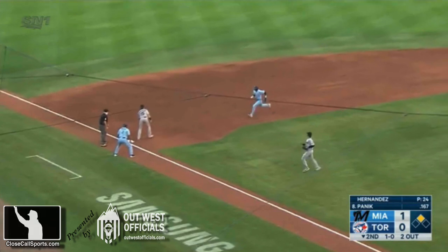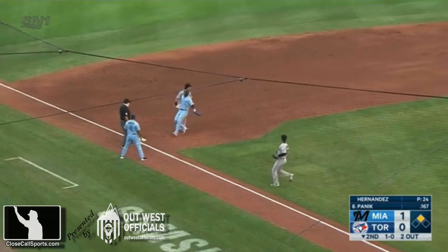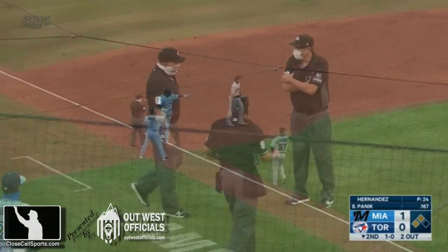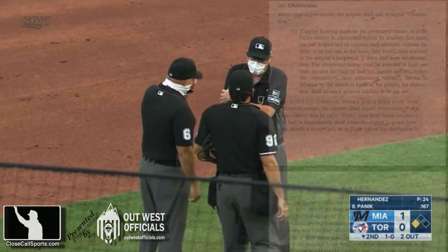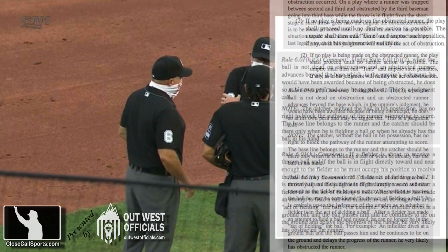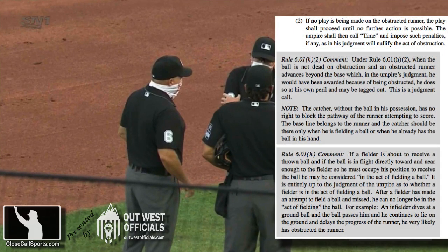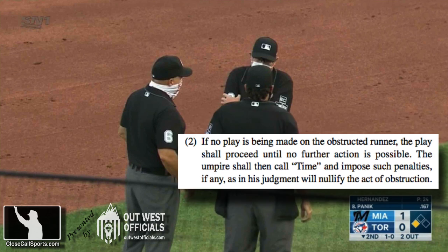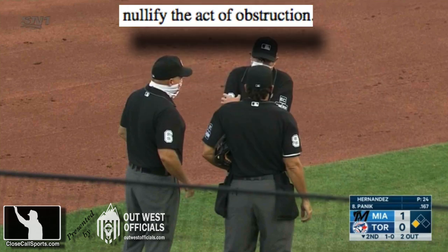That's proper. Then there's the tag out — Carlson calls the out. Now the umpires get together. What is the award for obstruction B? Remember, no play being made on the runner. You wait until no further action is possible. You call the out because an out occurred, and then once the play's over, time — and you impose such penalties that will nullify the act of obstruction. That's the key phrase.